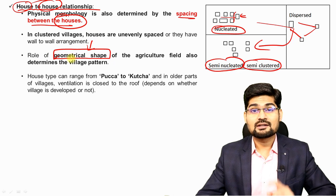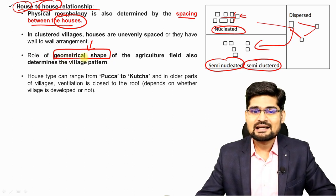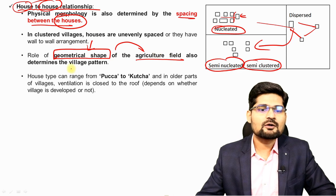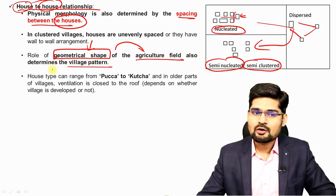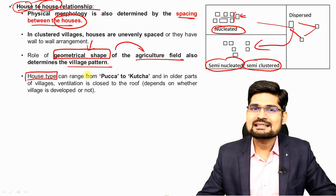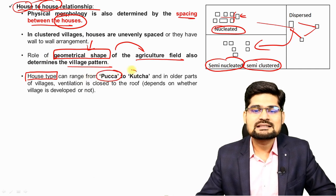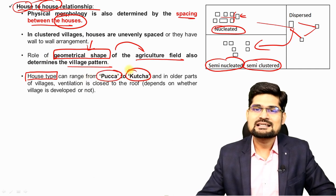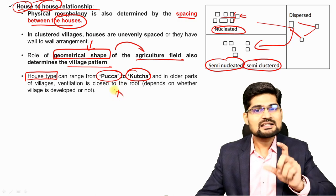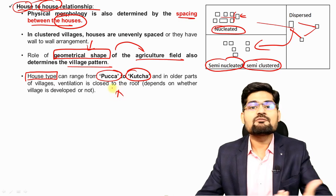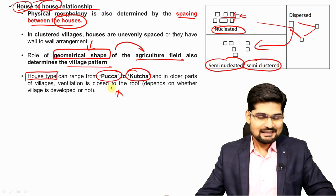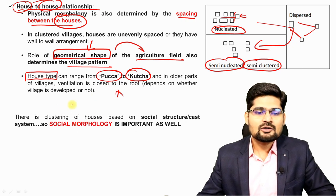The rule of geometrical shape becomes really important in identification and mapping of settlements. The geometrical shape of agricultural fields also determines village pattern. Additionally, house type — for example, from census data we get categories like pucca houses, kaccha houses, and semi-pucca kaccha houses — also makes up the physicality of these rural settlements.